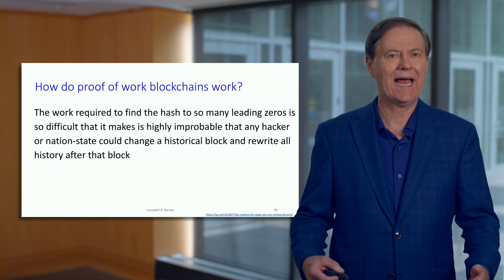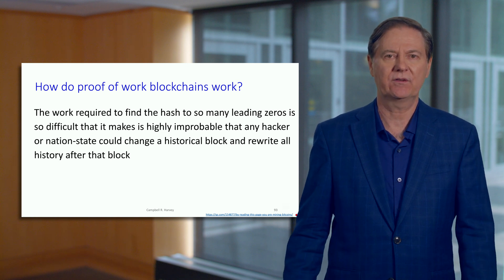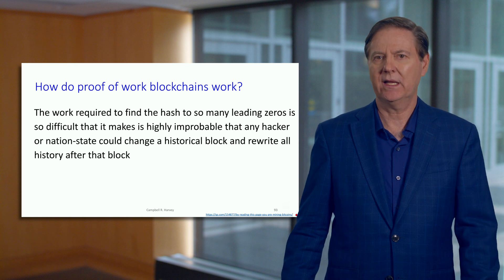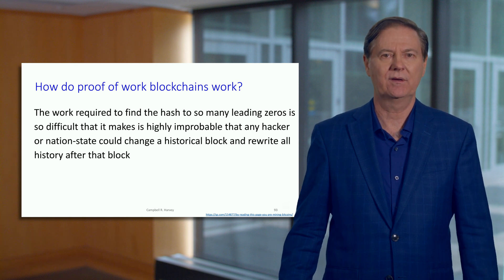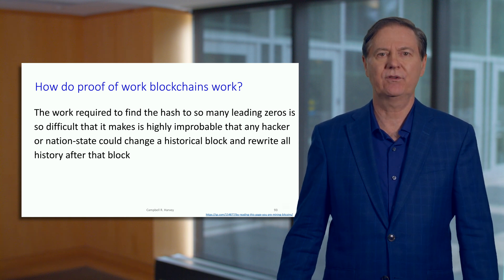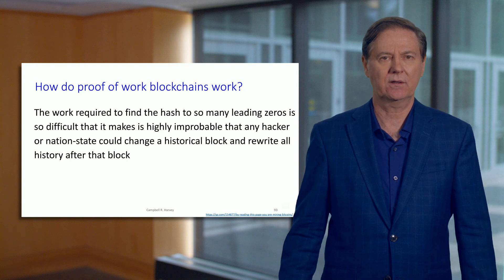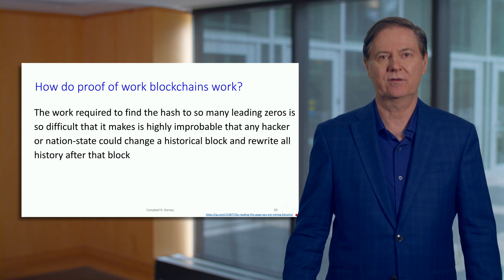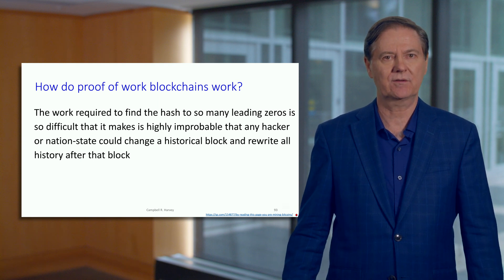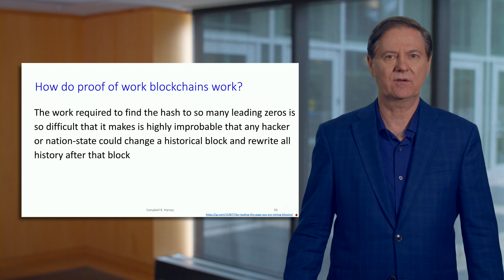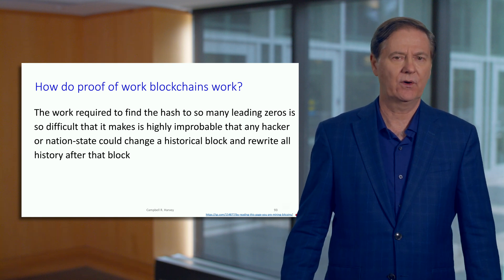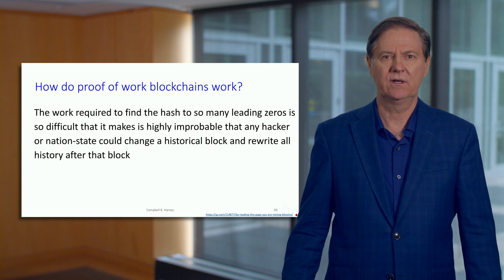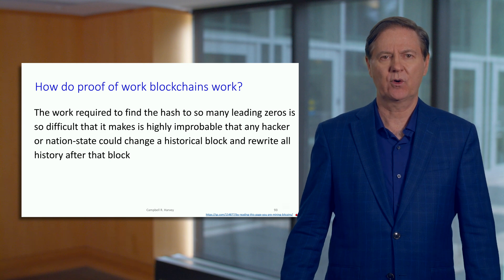So this is how proof-of-work blockchains operate. We'll talk later in the learning experience about different alternatives to proof of work, including proof of stake. And at the very end we talk about some of the risks, including environmental risk — the extreme amount of energy, most of it fossil-fuel based, that's used in mining and what that means for the future of cryptocurrency.